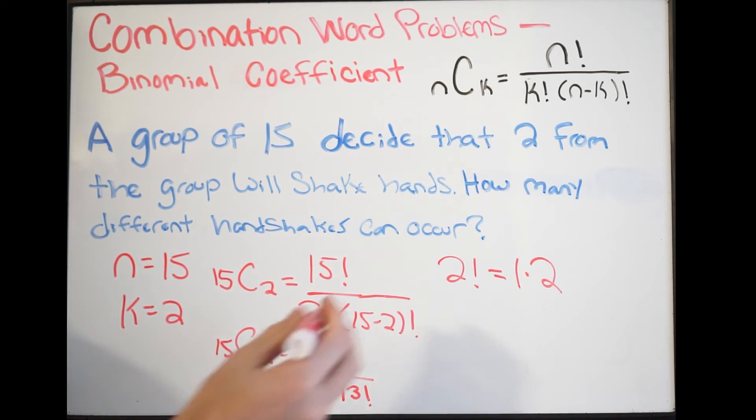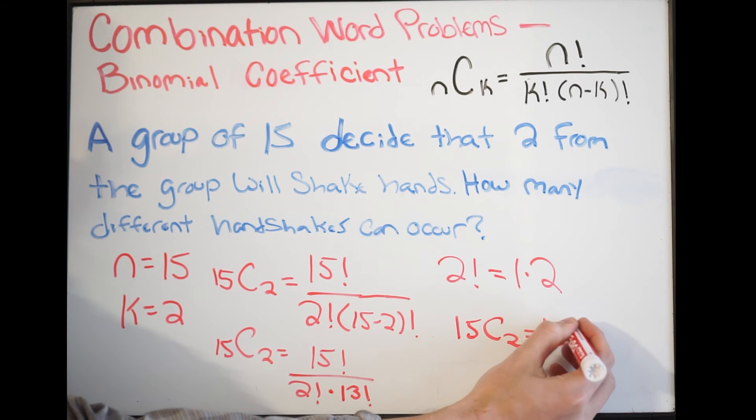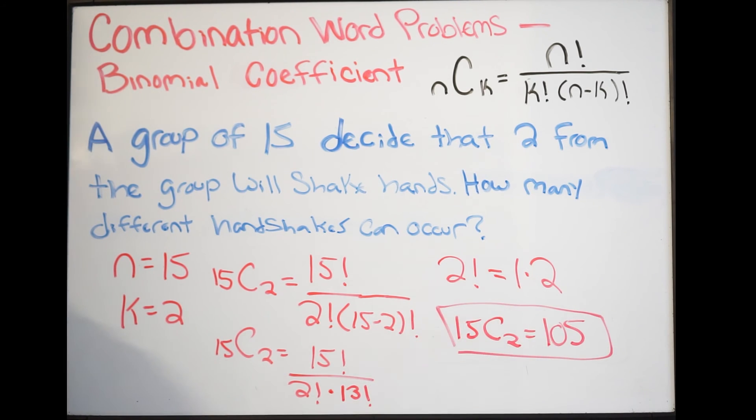Let's plug this into our calculator. When we plug this in, we get 15 choose 2 equals 105. This is going to be our final answer.